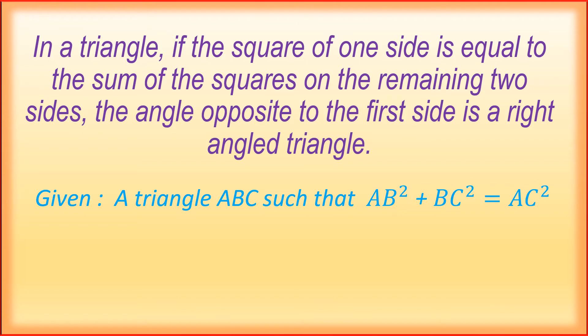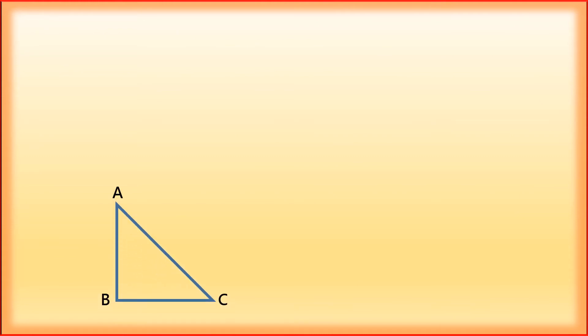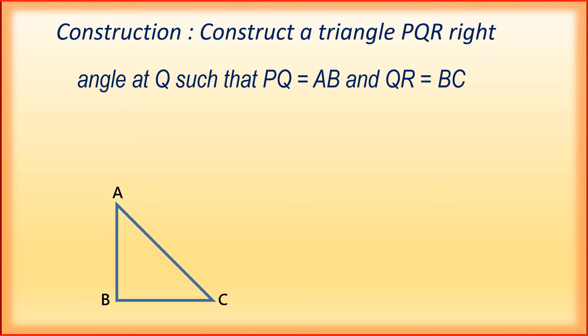In this question, given a triangle ABC such that AB square plus BC square is equal to AC square, we have to prove triangle ABC is a right-angled triangle. Construction: Construct a triangle PQR right-angled at Q such that PQ is equal to AB and QR is equal to BC.